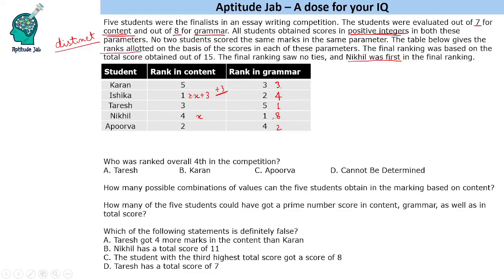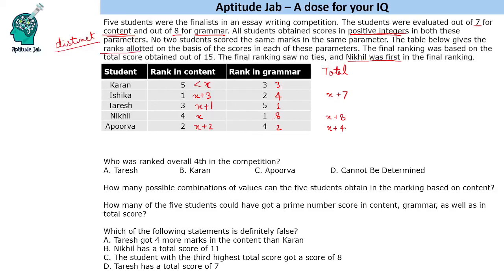Nikhil now has a lead of 8 in grammar. We established a minimum three-mark gap in content. If we try X plus 4 instead of X plus 3, the total for both Nikhil and Ishika becomes X plus 8, which creates a tie — not possible. So the content gap must be exactly X plus 3. Ishika's total is X plus 7. The rankings give Ishika X+3, next person X+2, then X+1, and Nikhil X in content. The fifth-ranked student (Karan) has less than X in content, and his total should be less than X plus 3 to avoid ties.